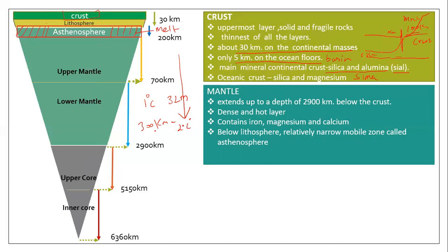The temperature increases as you go deeper through each layer. The upper mantle is melted, but the lower mantle is made of hard rock and is solid. The whole mantle is a dense and hot layer made of heavy material. Specifically, the mantle contains silica, magnesium, and some particles of iron and calcium.